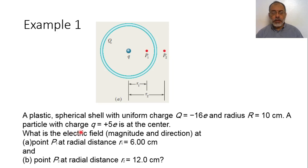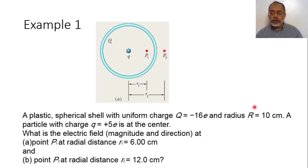We are required to find the electric field magnitude and direction at point P1, where P1 is at a radial distance of 6 centimeters. Since the radius of the shell is 10 centimeters, P1 is inside the spherical shell. We also need to find the electric field at point P2 at radial distance R2 equals 12 centimeters, which is outside the shell since the shell radius is 10 centimeters.